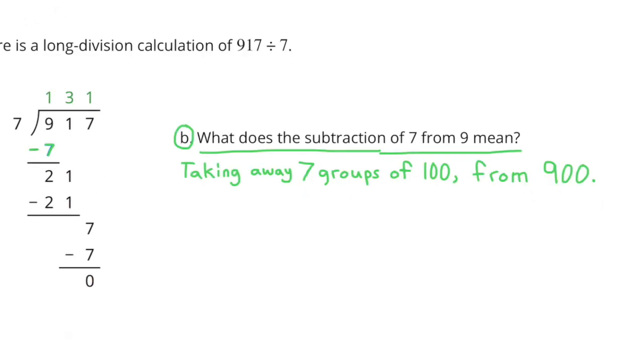B, What does the subtraction of 7 from 9 mean? It means taking away 7 groups of 100 from 900.